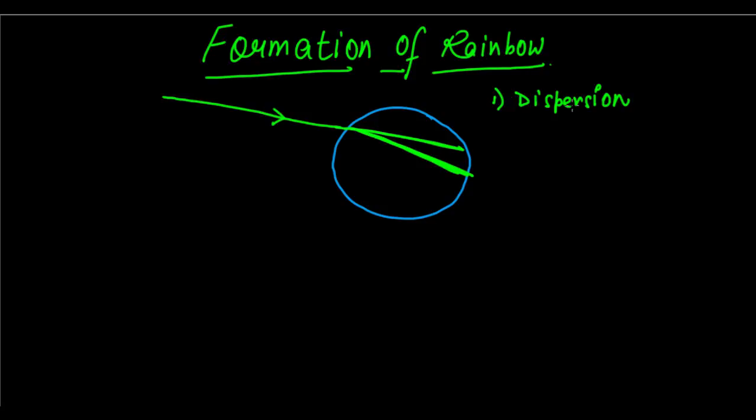The first thing when it enters, it is going to disperse. After dispersion, at the back of the raindrop, this is the back part of the raindrop. So it will go and strike the back of the raindrop or the water droplet. But here, it is going to undergo total internal reflection.